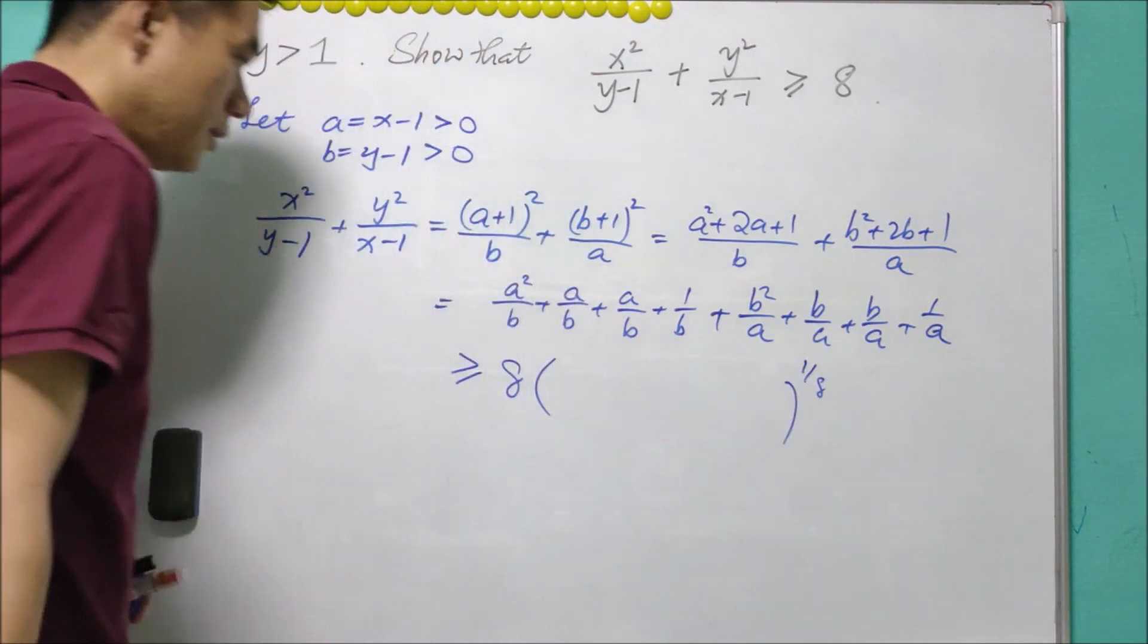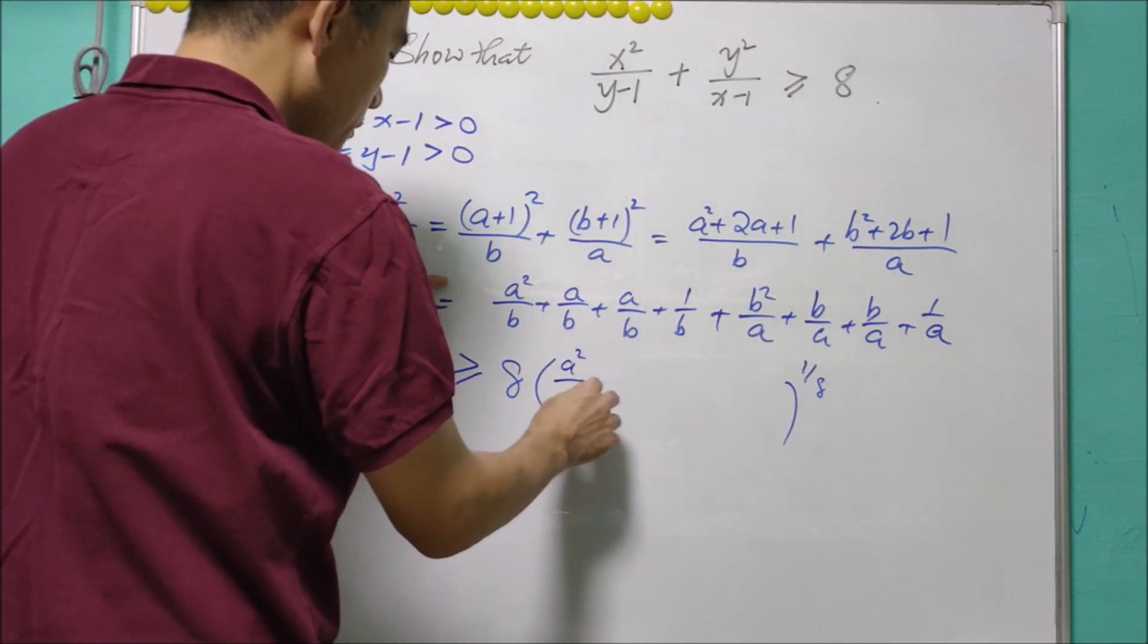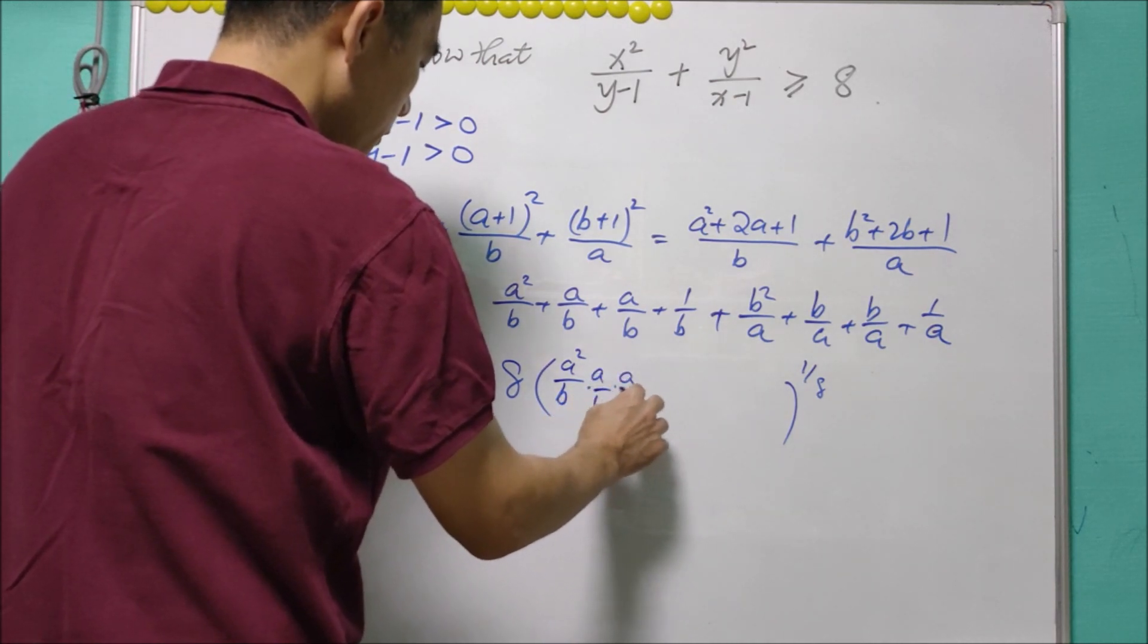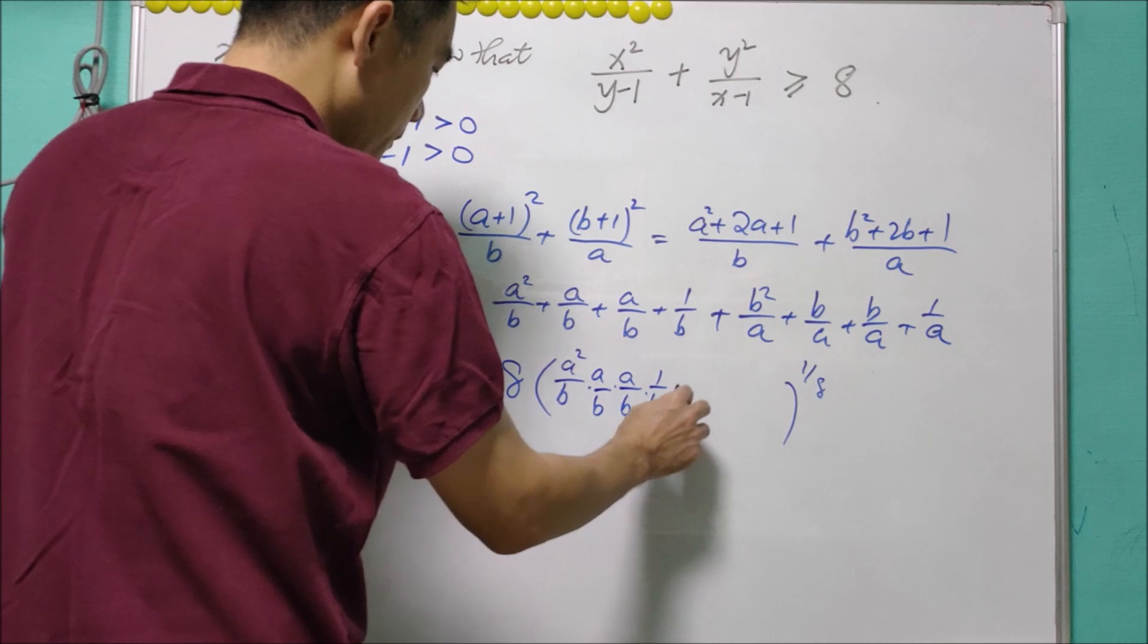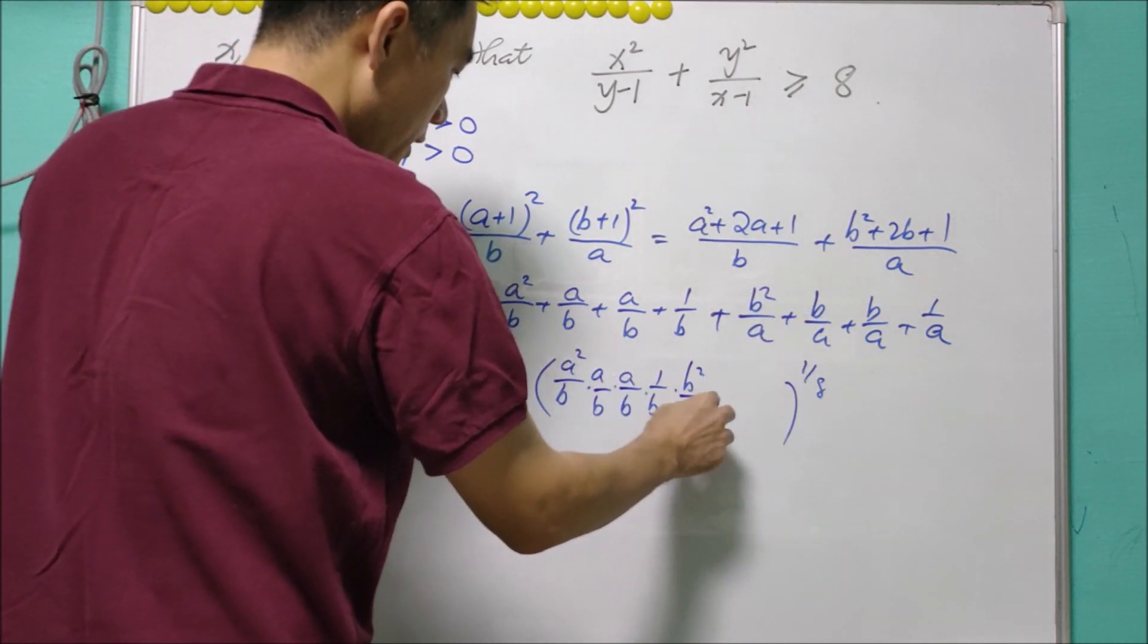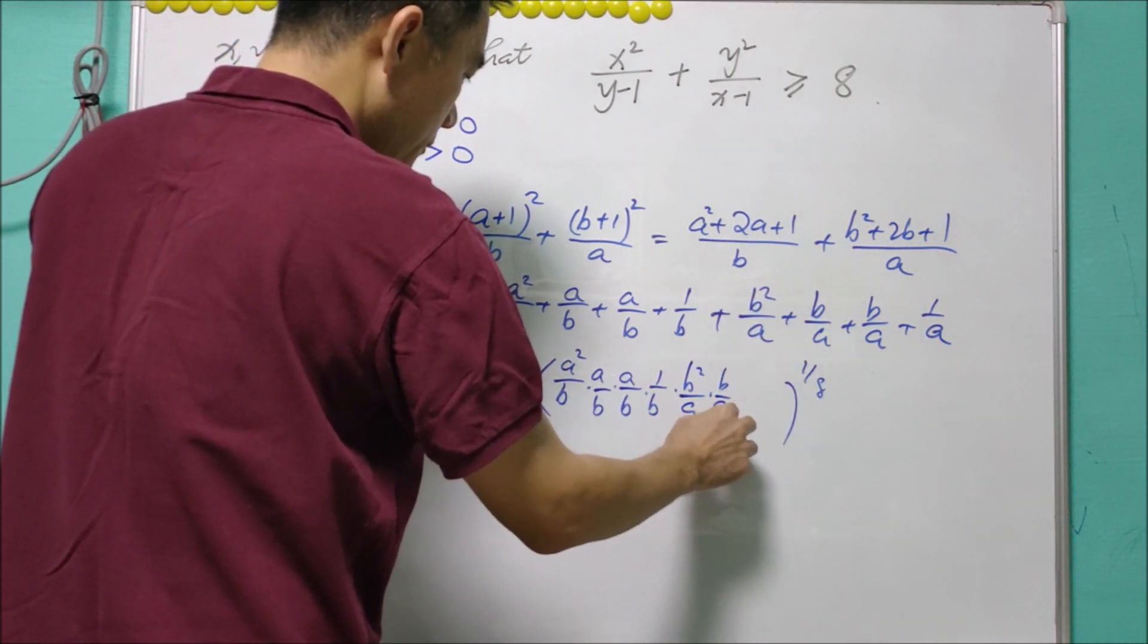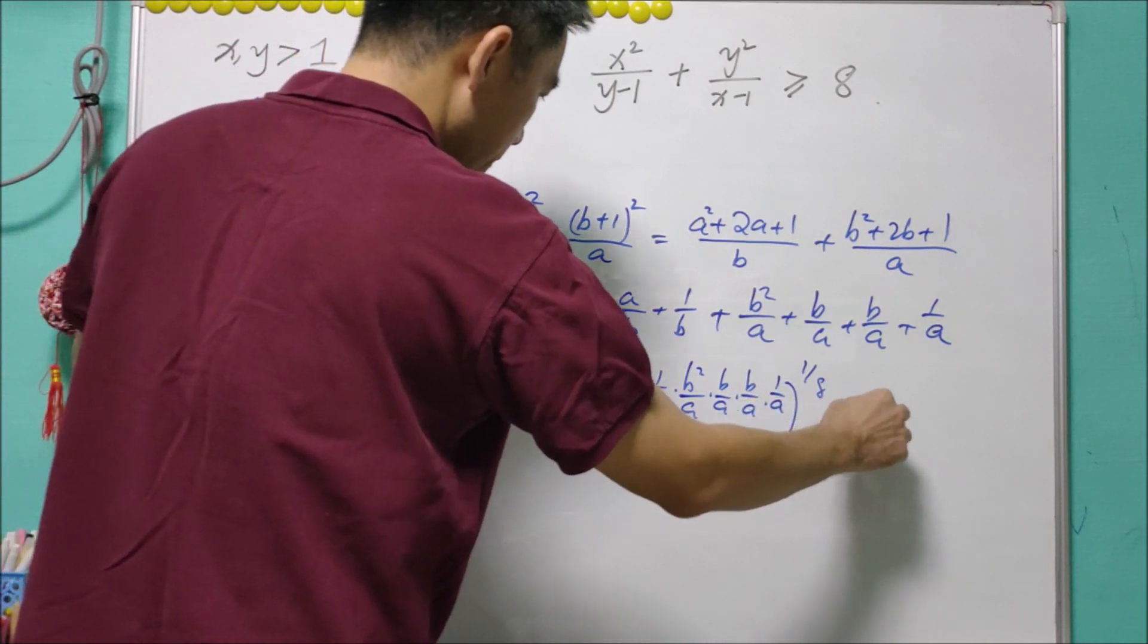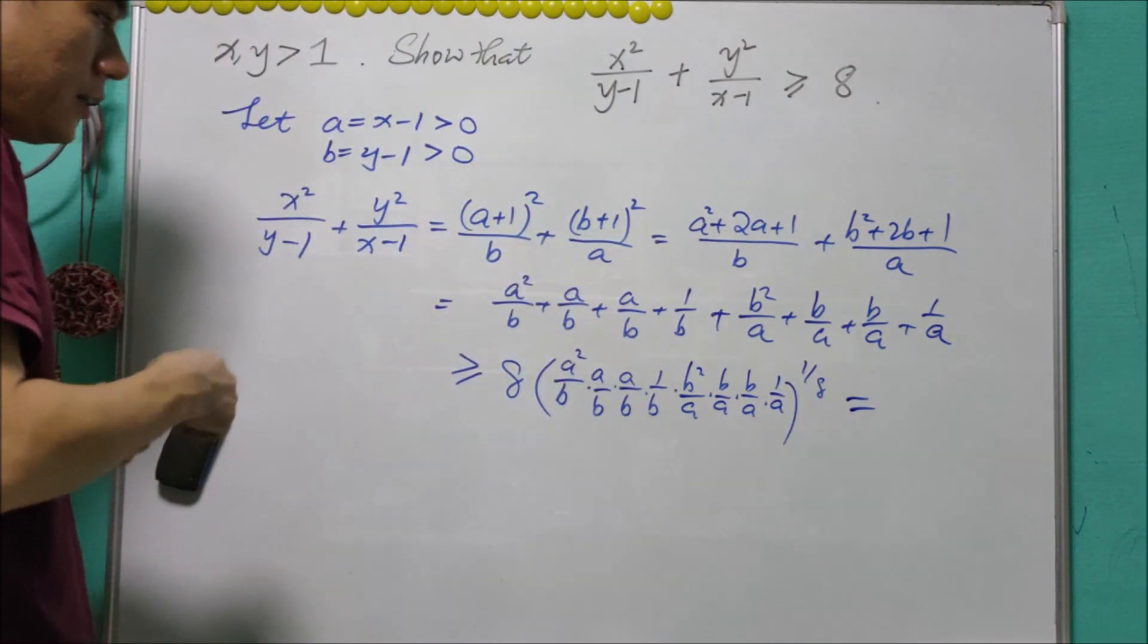So we may just write it out: a²/b, a/b, a/b, and 1/b, b²/a, b/a, b/a, b/a, and 1/a.